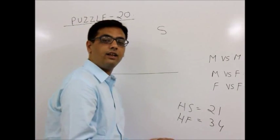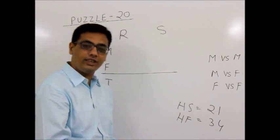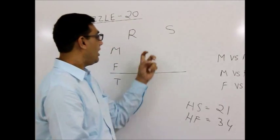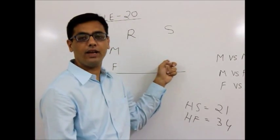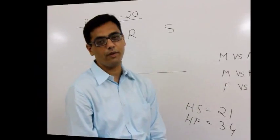So given this data, no points for guessing the question. The question is, how many male and how many female are there in each of the families?